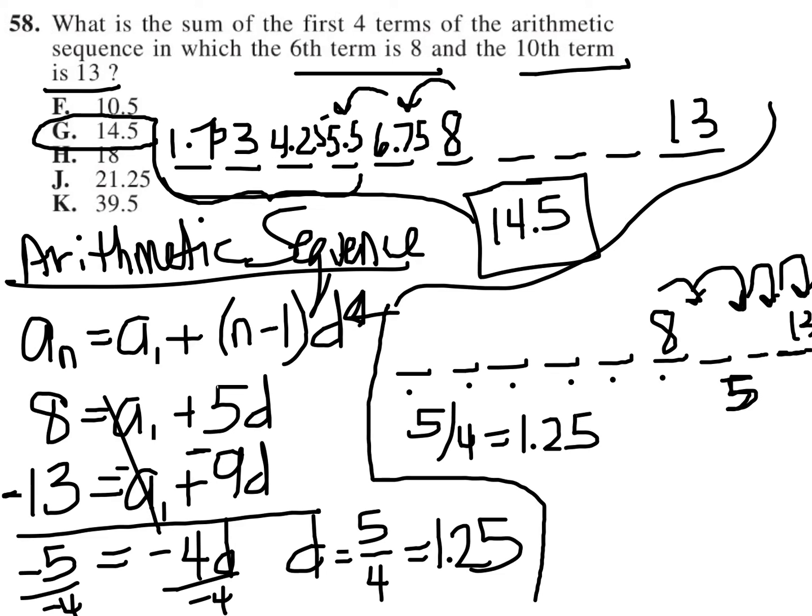That works because I know that each of these jumps, each of these four jumps here, have to be the exact same distance in an arithmetic sequence. So if I'm going a total distance of 5, then I can simply divide by 4 to figure out the distance of each individual jump.